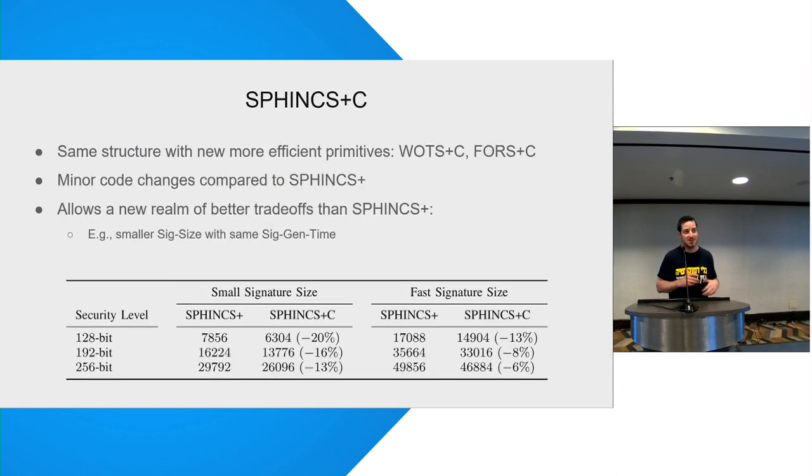So what we do here is we present SPHINCS+C, or compressed version. And we're going to use the exact same structure as the original variant. However, we're going to tweak some of the primitives that are used, mainly WOTS, which is a one-time signature, and FORS, which is a few-time signature. And we're going to provide compressed, more efficient versions of them. And it actually requires very small, minor code changes to the original scheme. And it opens a new realm of much better trade-offs.